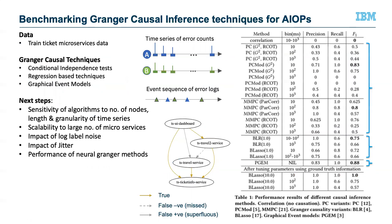We consider a benchmark train ticket microservice system and deploy it on a Kubernetes cluster. We inject faults in different microservices, collect the log messages, bin them into a time series or an event sequence, and then feed them to three families of Granger causal inference techniques.